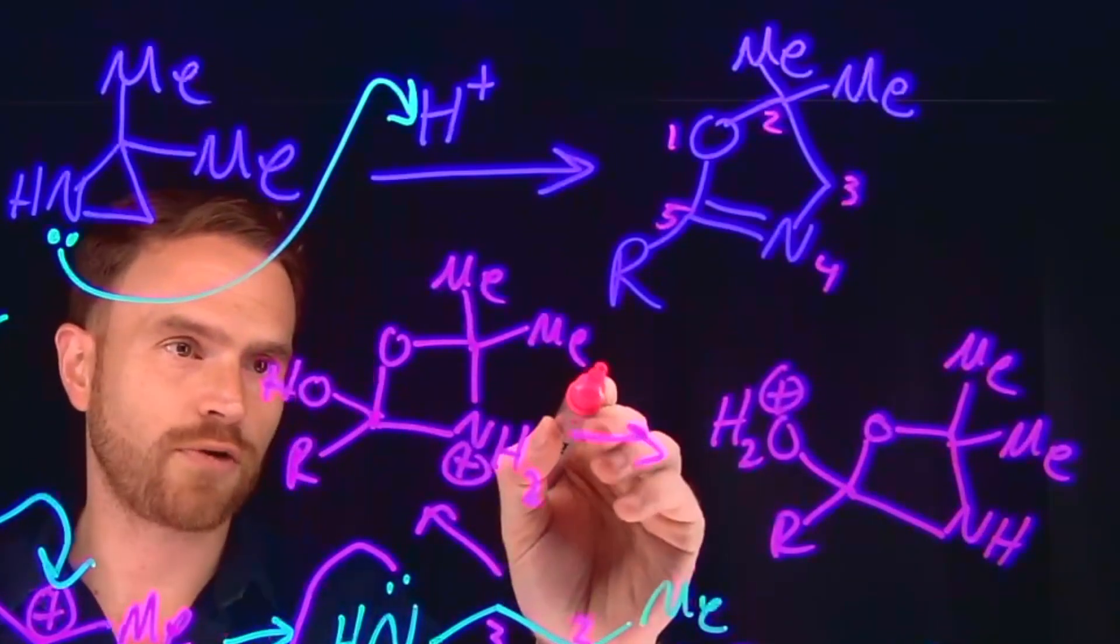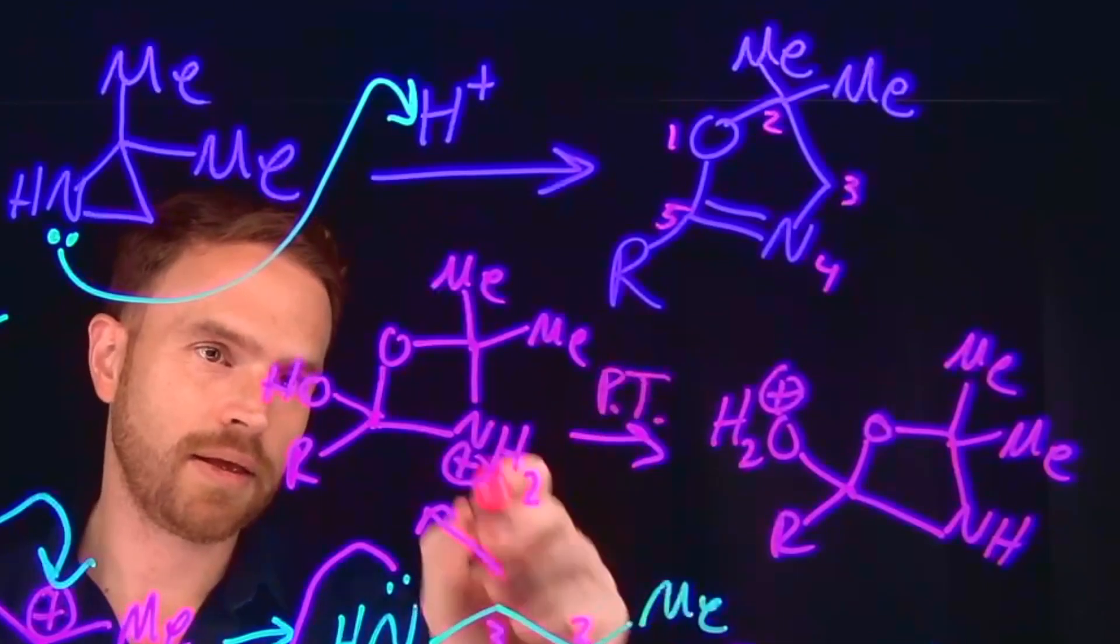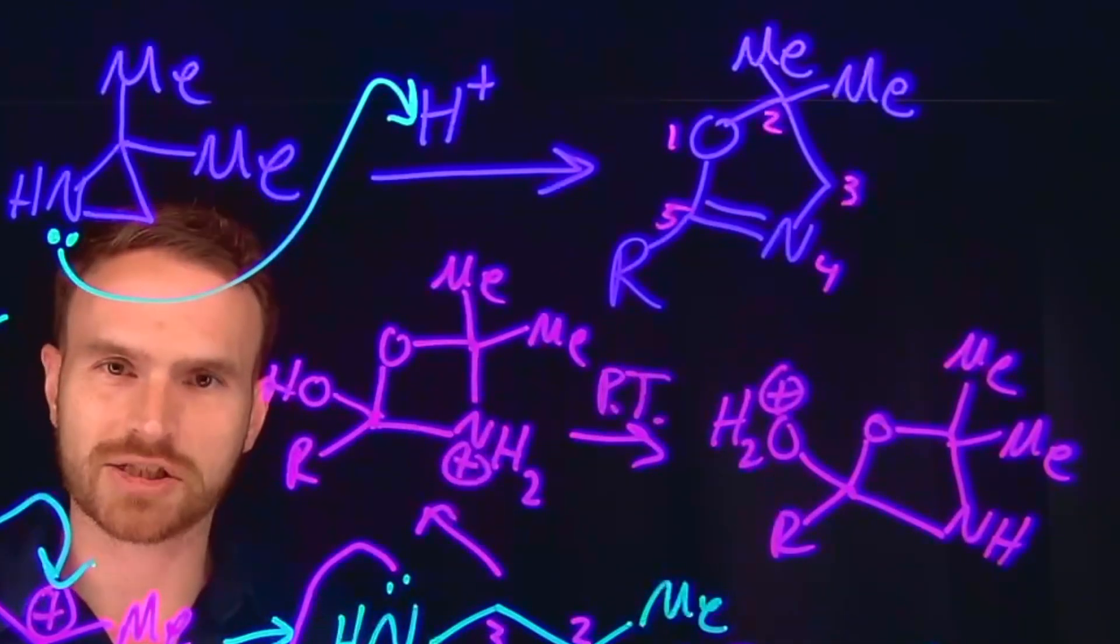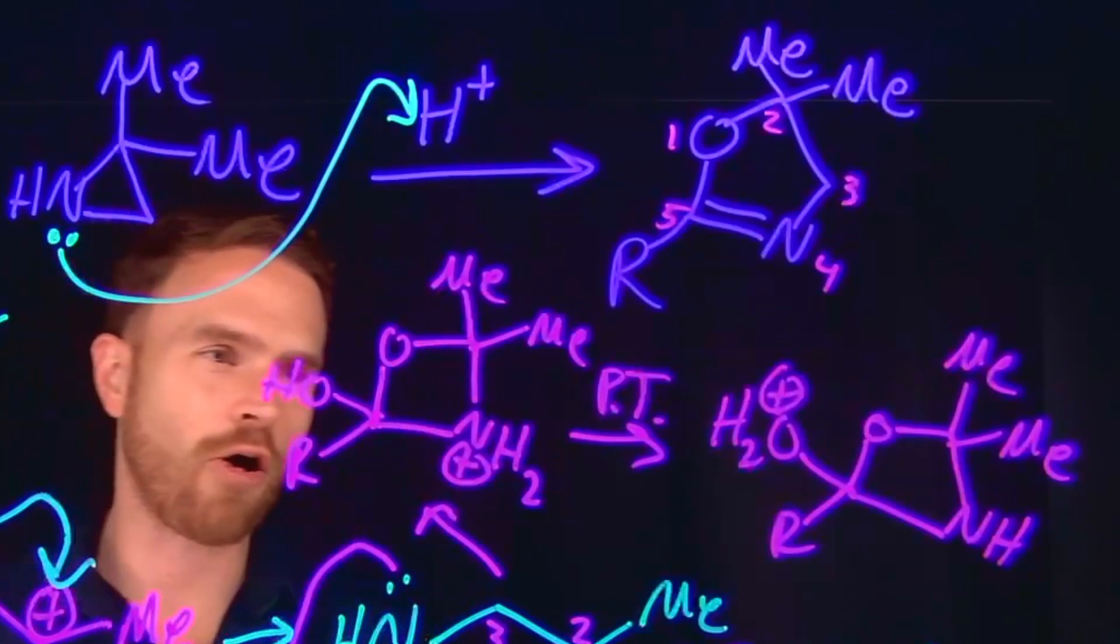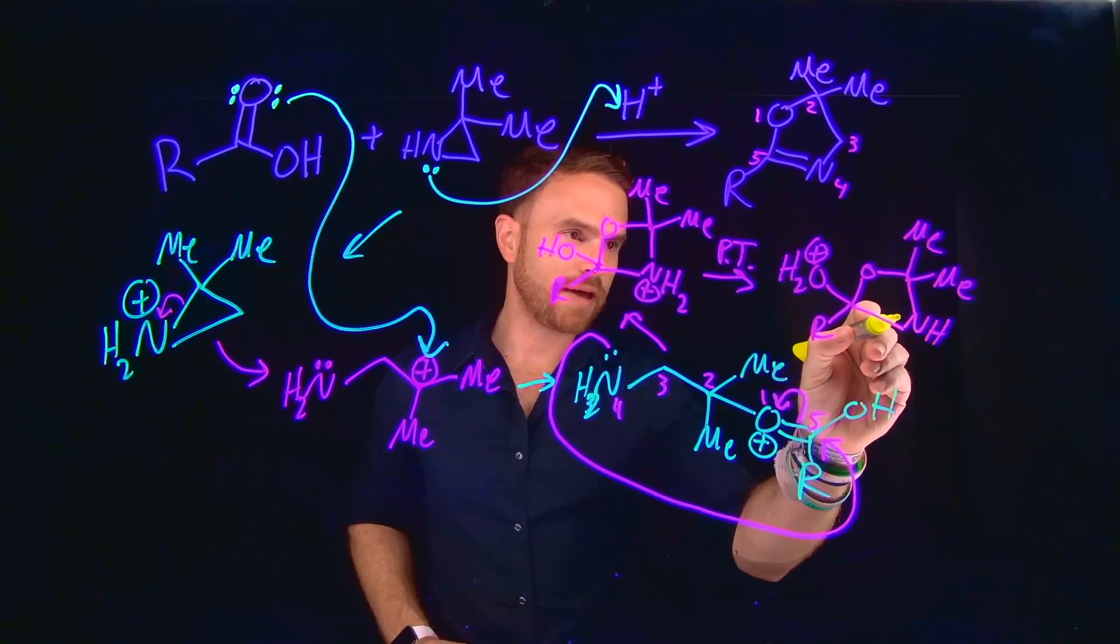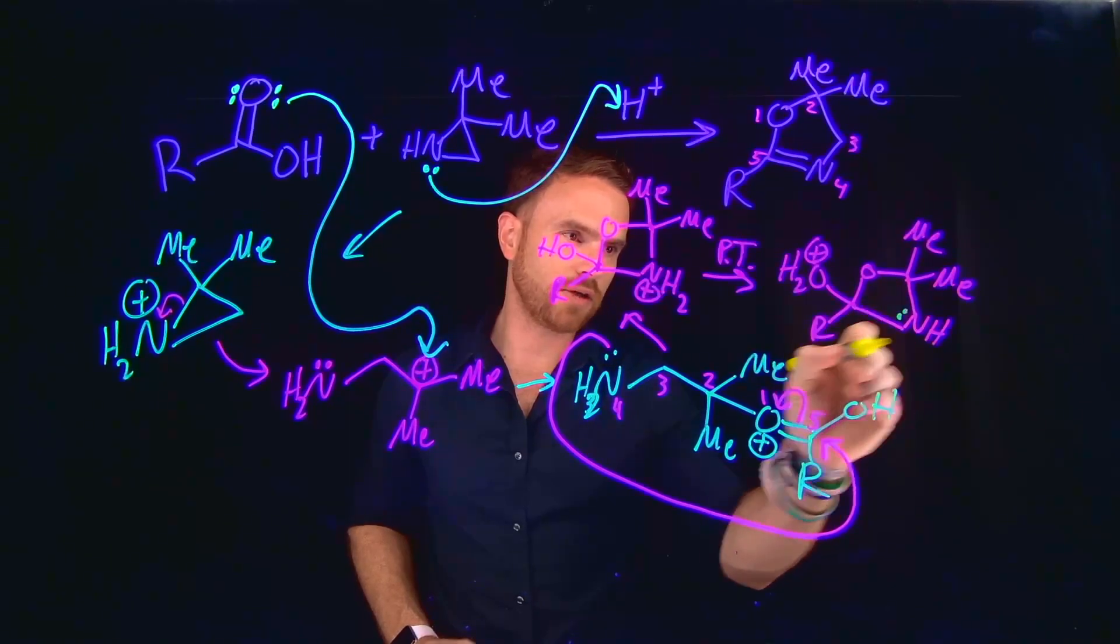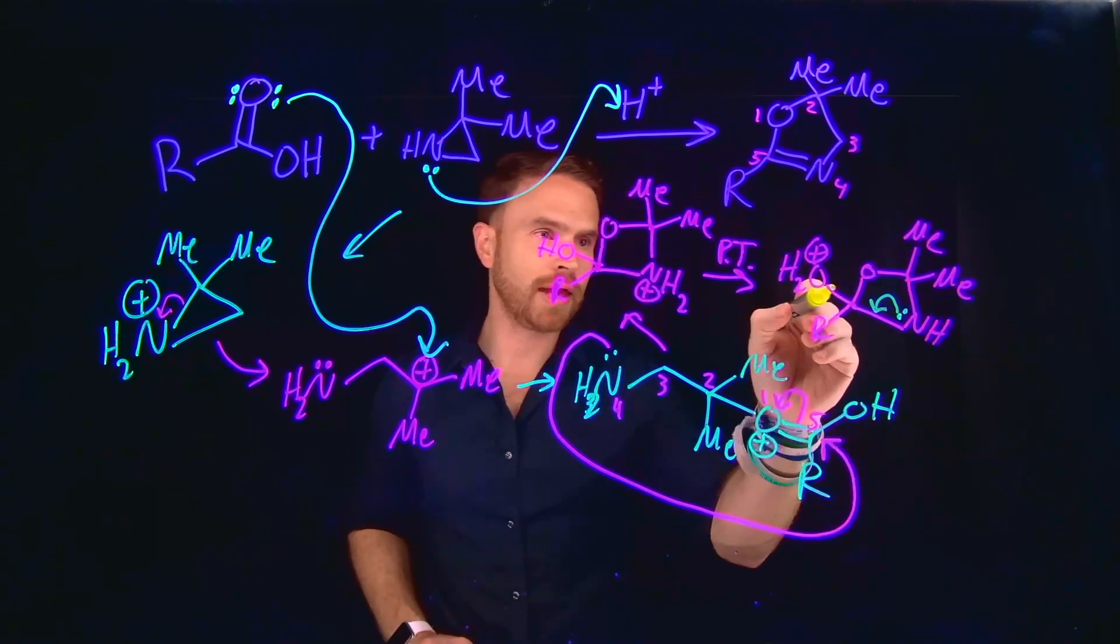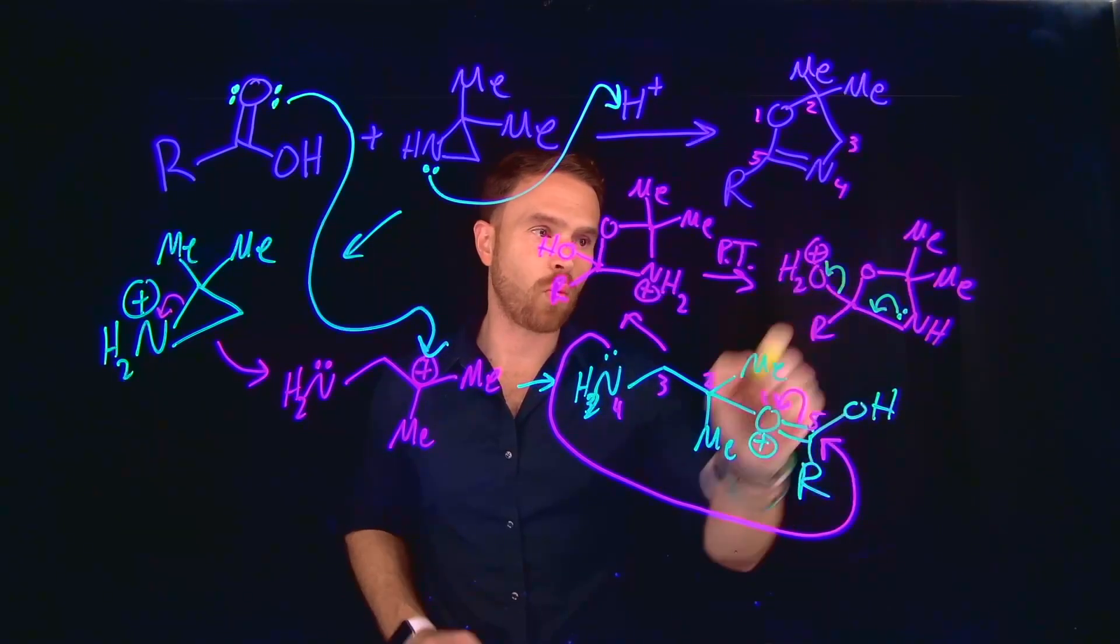So remember, a proton transfer has occurred between the nitrogen and hydrogen, and it has been transferred over to oxygen on this alcohol, making this a great leaving group. And that process left behind a lone pair of electrons on this nitrogen, which can now come down to make a new carbon to nitrogen double bond. And that is actually how you free up water.